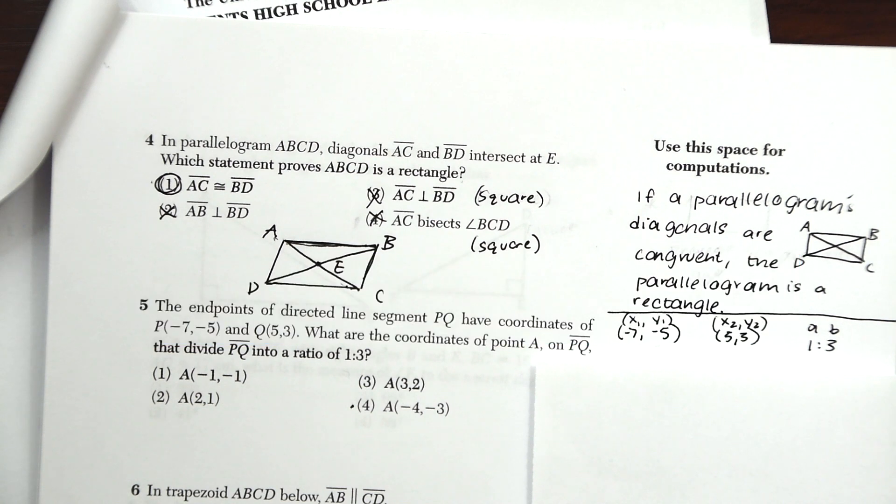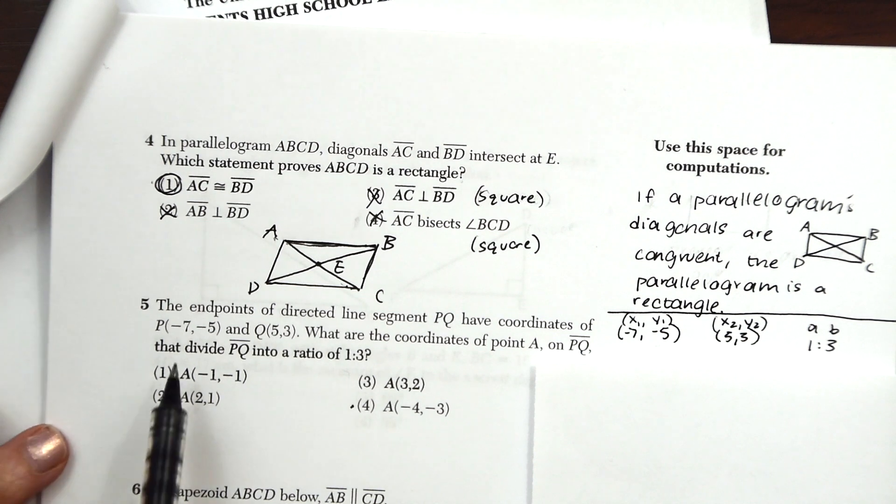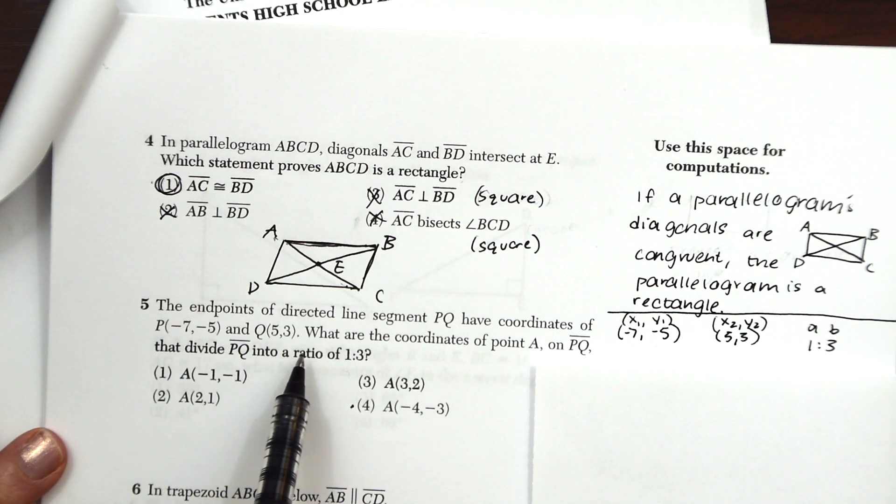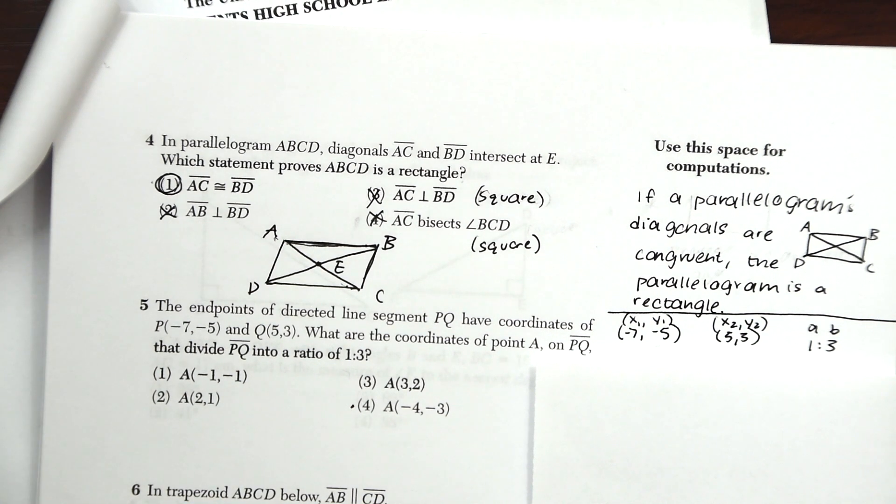The endpoints of a directed line segment PQ have coordinates of P(-7, -5) and Q(5, 3). What are the coordinates of point A on PQ that divide PQ into a ratio of 1 to 3?